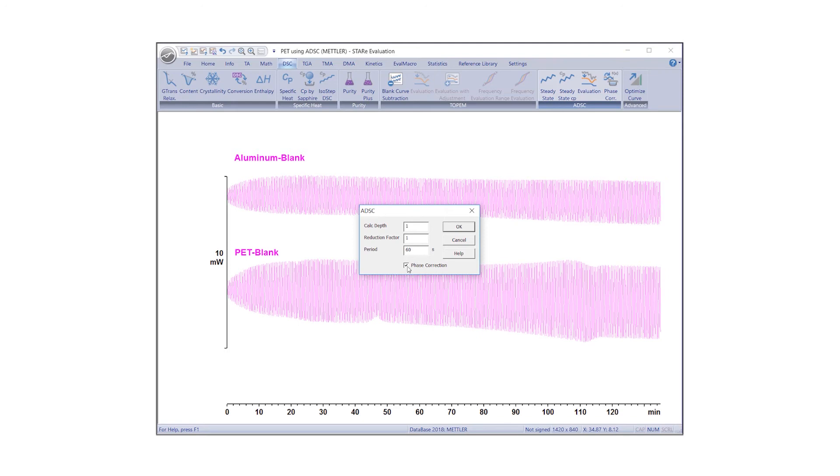Select Phase Correction. This corrects the heat capacity value by a factor calculated from the measured phase angle. Confirm by clicking OK.